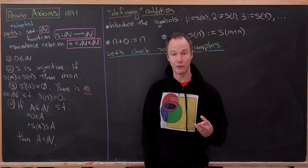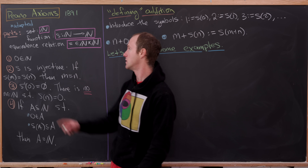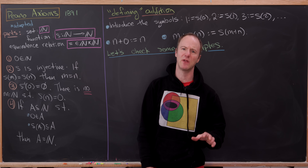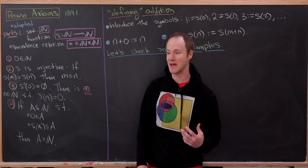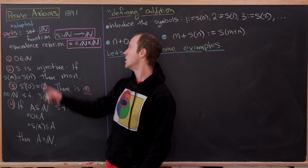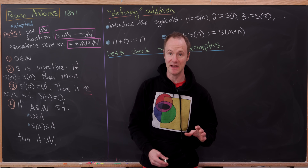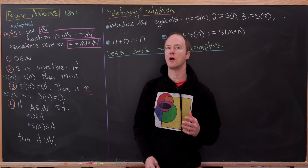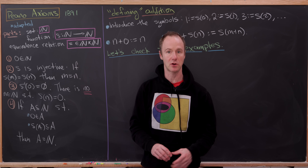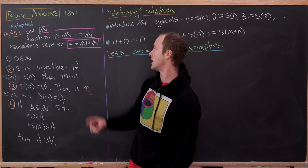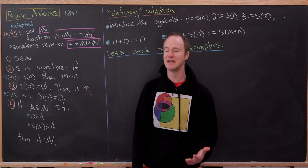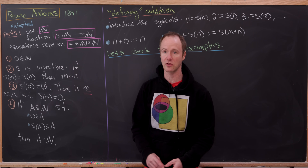There are three parts to this setup. We've got a set, which we'll call blackboard bold N — we want to think of this as the natural numbers, that's what we're building towards. We have a function S which goes from N to N; this will be called the successor function. And then we've got an equivalence relation, which we'll call 'equals' on the set N. An equivalence relation is technically a subset of N cross N.